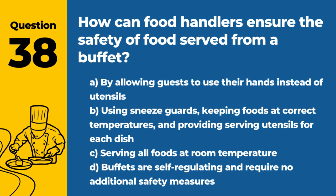Question 38. How can food handlers ensure the safety of food served from a buffet? The answer is B: Using sneeze guards, keeping foods at correct temperatures, and providing serving utensils for each dish. These practices help maintain the safety of buffet service.